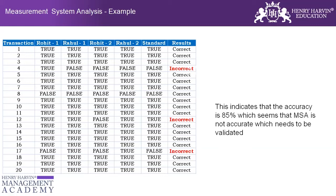In this particular example, it is actually both repeatability and reproducibility. Rohit measures and gives his observation, then does it again — that is repeatability. When we introduce Rahul as another operator who also repeats the measurement, that adds reproducibility. For a discrete data measurement system analysis using Attribute Agreement Analysis, we need both repeatability and reproducibility. We also have a standard whose ratings are included.